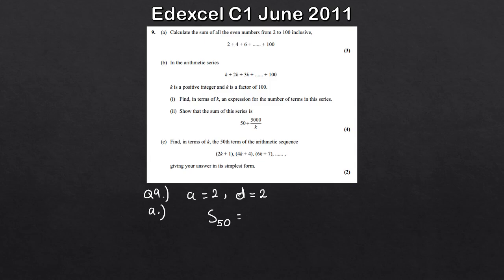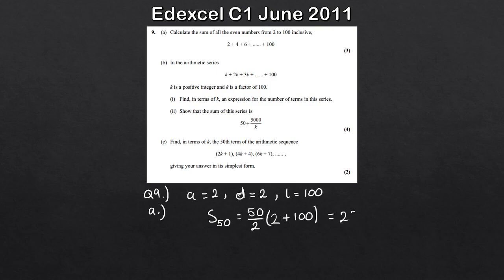We can use the easy formula here because we know the first term and the last term, which is 100. Using the formula N over 2 times (A plus L), where N is 50, A is 2, and L is 100, we get 25 times 102.